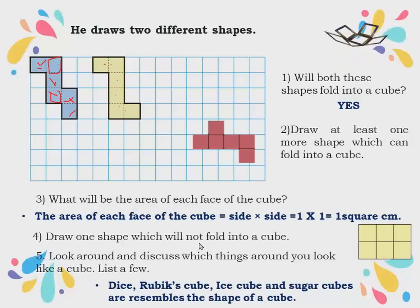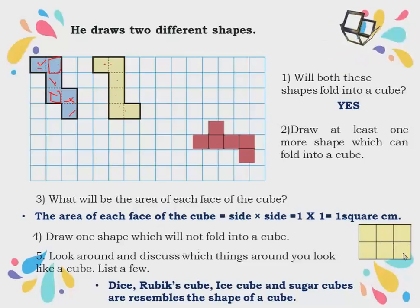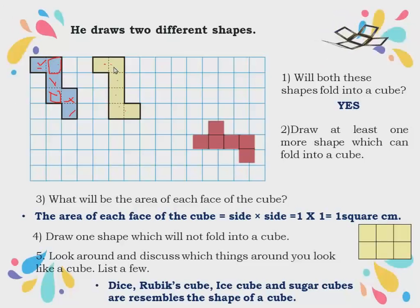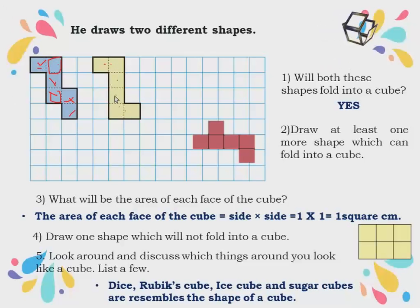Now, draw one shape which will not be folded into a cube. This is the shape drawn — it also has six squares. Just now I said if six sides are there it can be folded into a cube, but no — we can join them but cannot fold this into a cube. So if exactly six squares are there, we cannot always say it can be folded into a cube; you have to use imagination. For example, taking the bottom and folding side parts — think through whether each face closes properly.